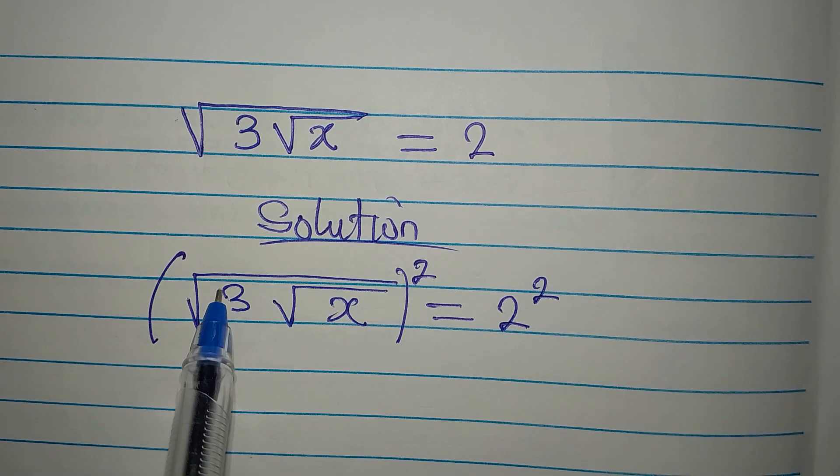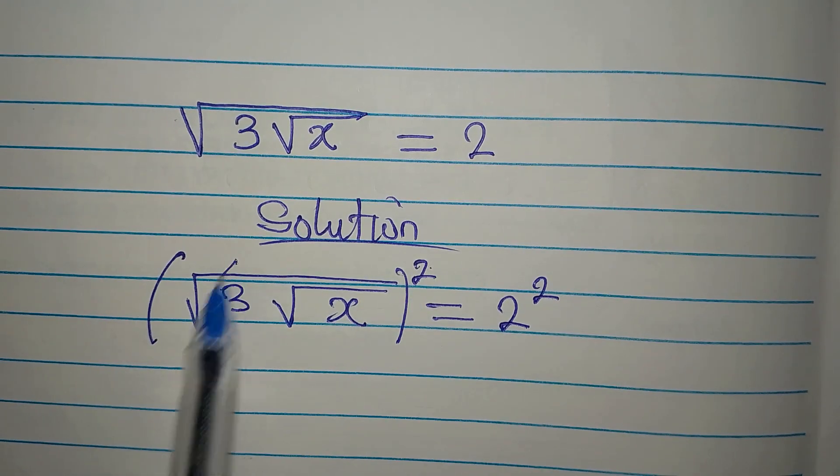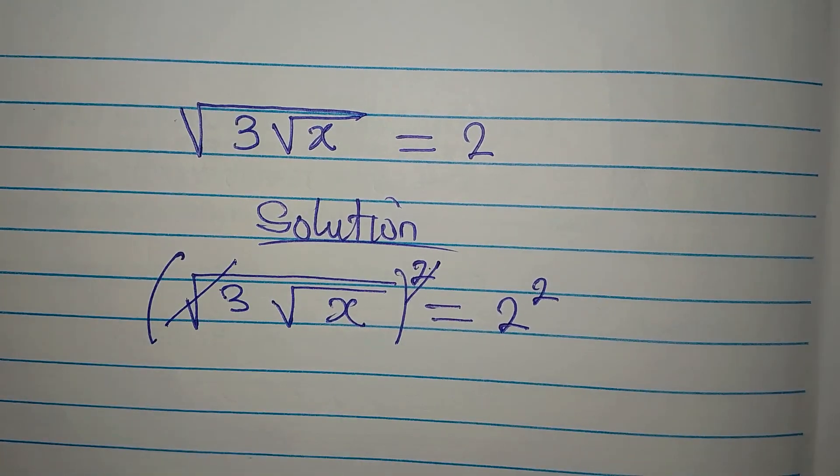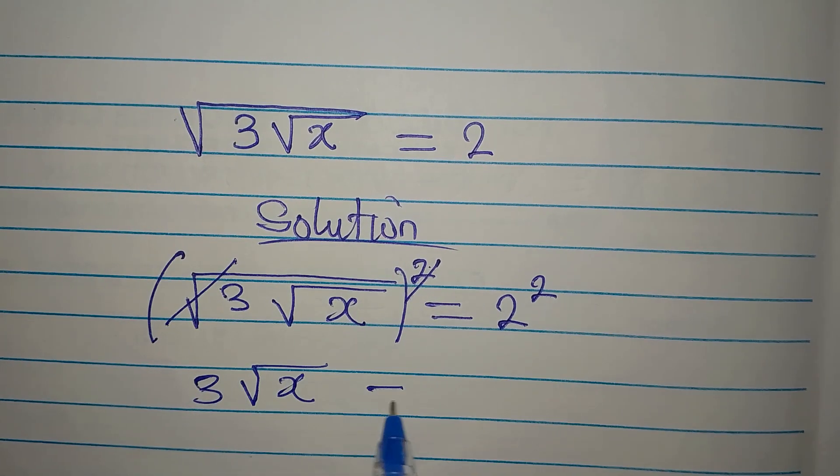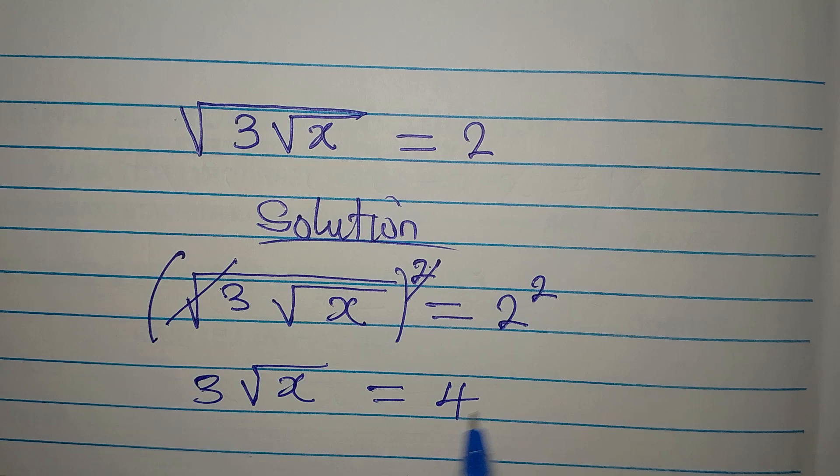Now, if you square this, this and this will cancel each other. So we have 3 root x on the left. On the right we have 4.